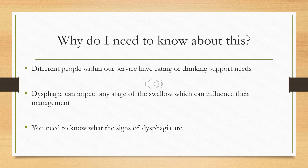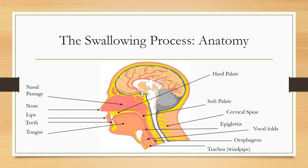Firstly would be deglutition — that's the collective name for all of the stages in the swallow. If one or more of these stages show signs of difficulty, we say that a person has dysphagia, and depending on the type of difficulty within the stage, it will influence a person's management of their dysphagia. You are going to be working with a person throughout the day, and every day we all eat and drink, so it is really important that you know how to best support a person with eating and drinking and that you know what the signs of dysphagia are.